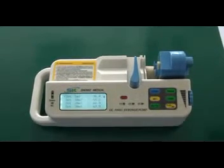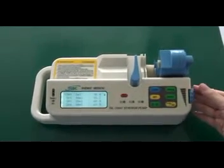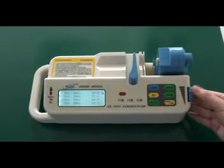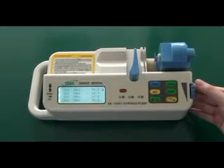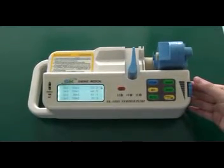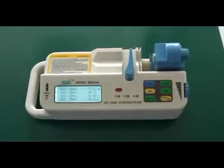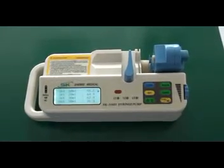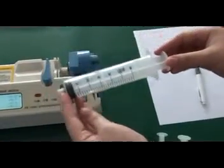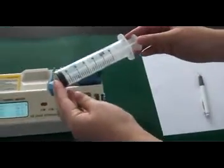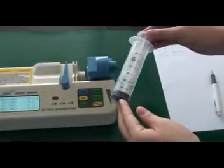Thirdly, turn the adjusting knob to make the cursor point at set 50 ml. Then fix the 50 ml syringe into the pump. How to fix this? You need several steps to follow.